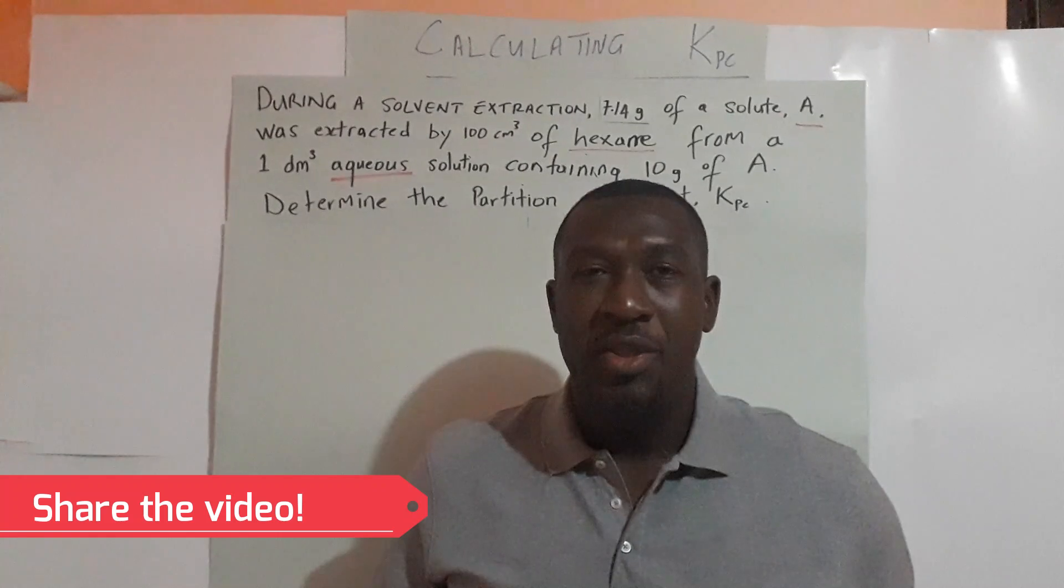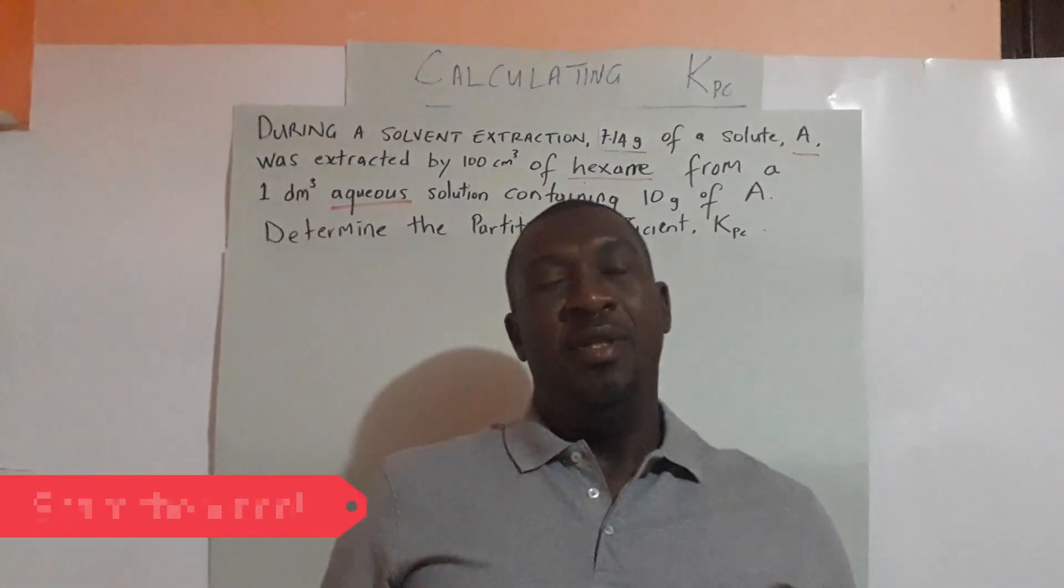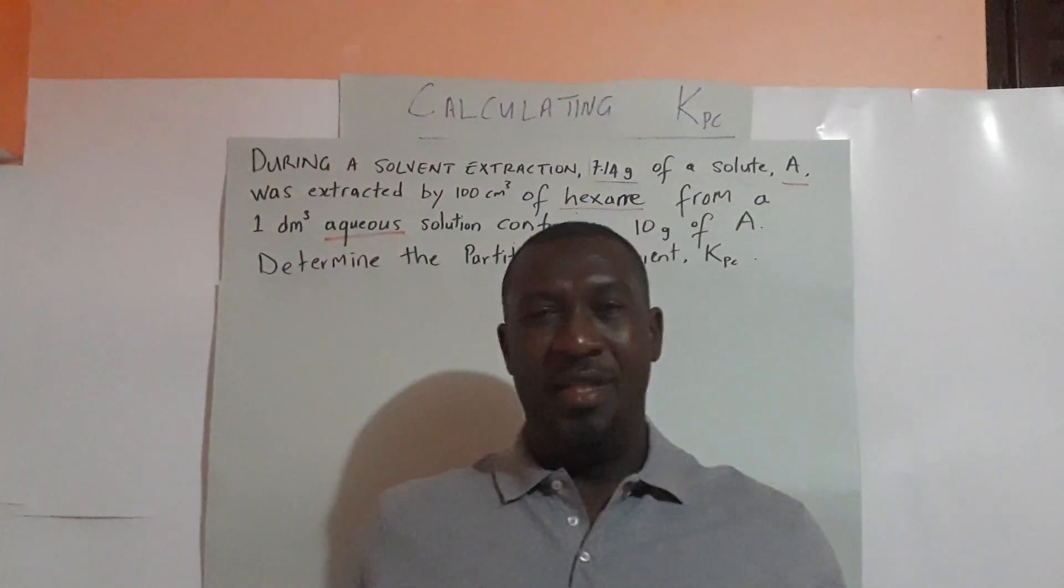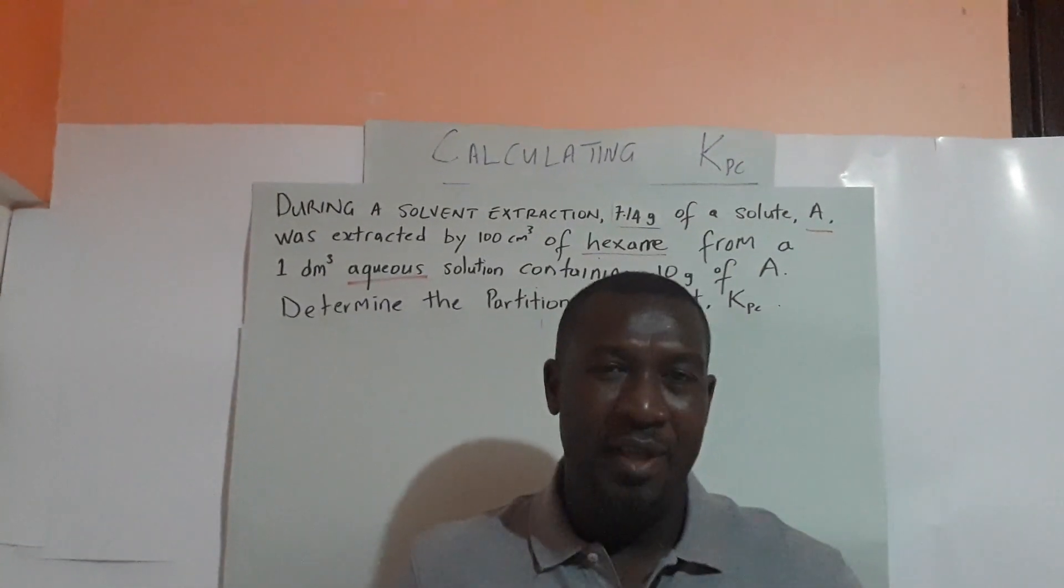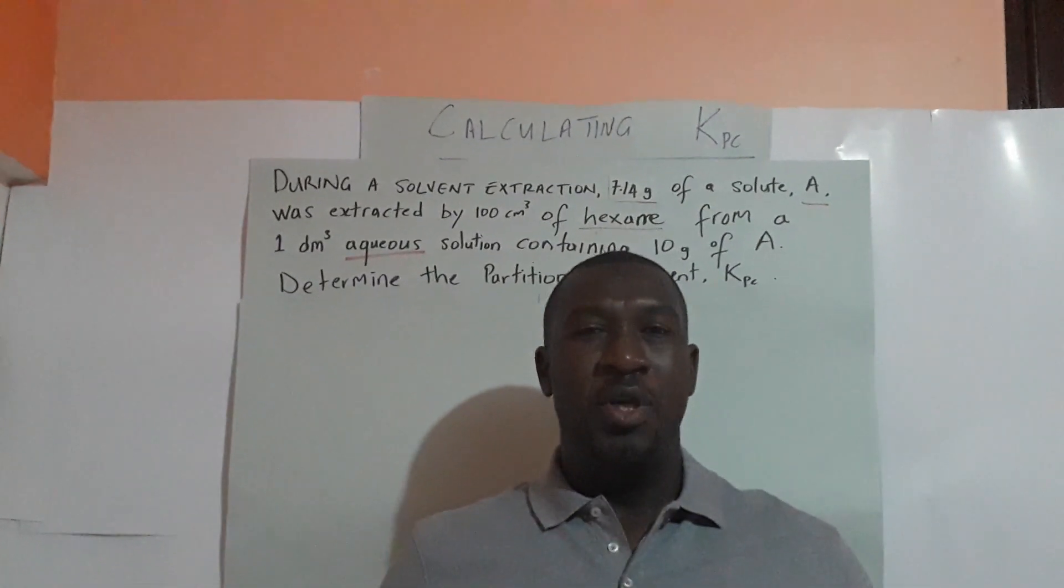You have a solution containing a solute and a solvent, and then you use another solvent which is immiscible with the first solvent to pull the solute out of it.